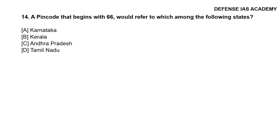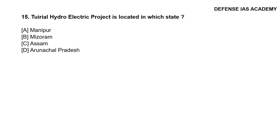Question 14: A pin code that begins with 66 would refer to which among the following states? The correct answer is option D, Tamil Nadu. Question 15: The Tuirial hydroelectric project is located in which state? The correct answer is option B, Mizoram.